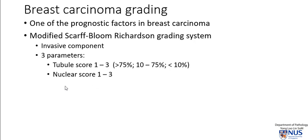The next component is the nuclear score, again from 1 to 3, with 3 being a tumor with the most nuclear pleomorphism. A tumor that does not show much nuclear pleomorphism will be scored as 1, a moderate degree of pleomorphism scores 2, and marked pleomorphism scores 3.